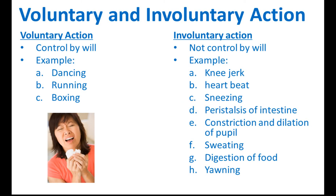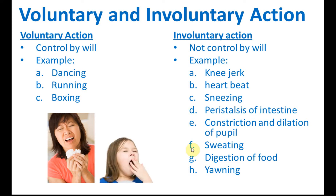Our intestines are actually in constant motion — contracting and releasing to move food along the intestine. Constriction and dilation of pupils: our pupils can constrict and dilate to control the amount of light going into our eyes. Sweating is also involuntary, as is digestion of food — you don't need to think about how to digest; your body does it automatically. Yawning is involuntary too. Remember these involuntary actions because the exam may ask you to identify them.